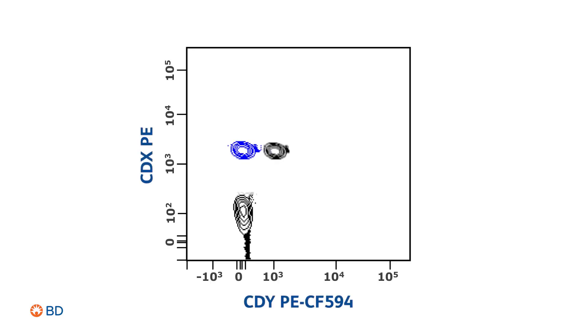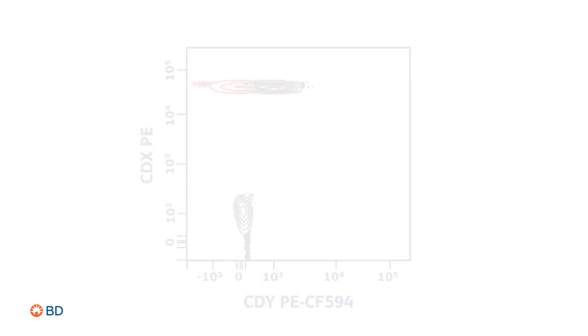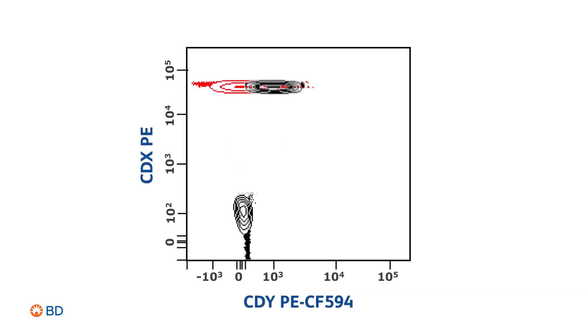The larger the spread, the more difficult it is to resolve dim populations from negative ones. In this example, the CDX expression is low, resulting in limited spread. Therefore, it is easy to resolve the CDX positive CDY dim populations shown in black. However, if the CDX expression is high, resulting in large spread, then it is difficult, if not impossible, to fully resolve the CDX bright CDY dim populations shown in black.